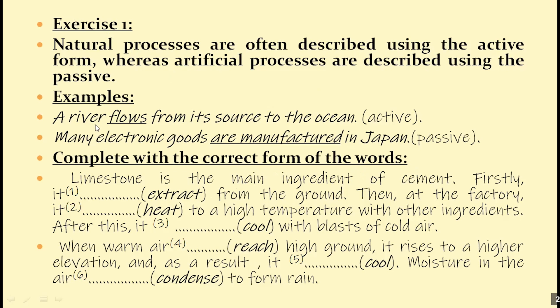Like this example: a river flows from its source to the ocean. This process is natural — it happens in nature without the intervention of human beings. If a process is artificial, it means that human beings are involved, like this example: many electronic goods are manufactured in Japan. This process is artificial, that's why we use the passive, which is formed by using verb to be plus the past participle.